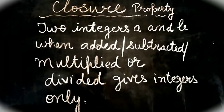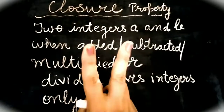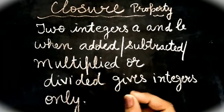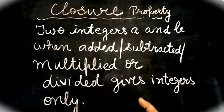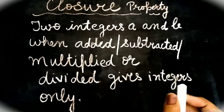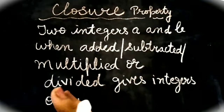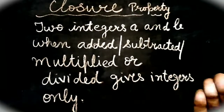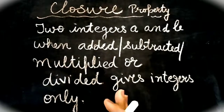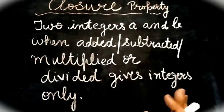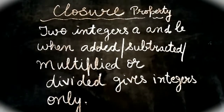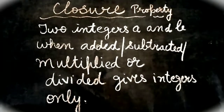What does it mean? कि अगर कोई भी दो integers हैं, अगर मैं उनको add करूं तो जो answer आए वो भी integer है, अगर मैं उनको subtract करूं जो answer आए वो भी integer है, अगर मैं उनको multiply करूं the product should also be an integer, और if I divide them then also the answer should be an integer. Now let us look at this property with the help of an example.